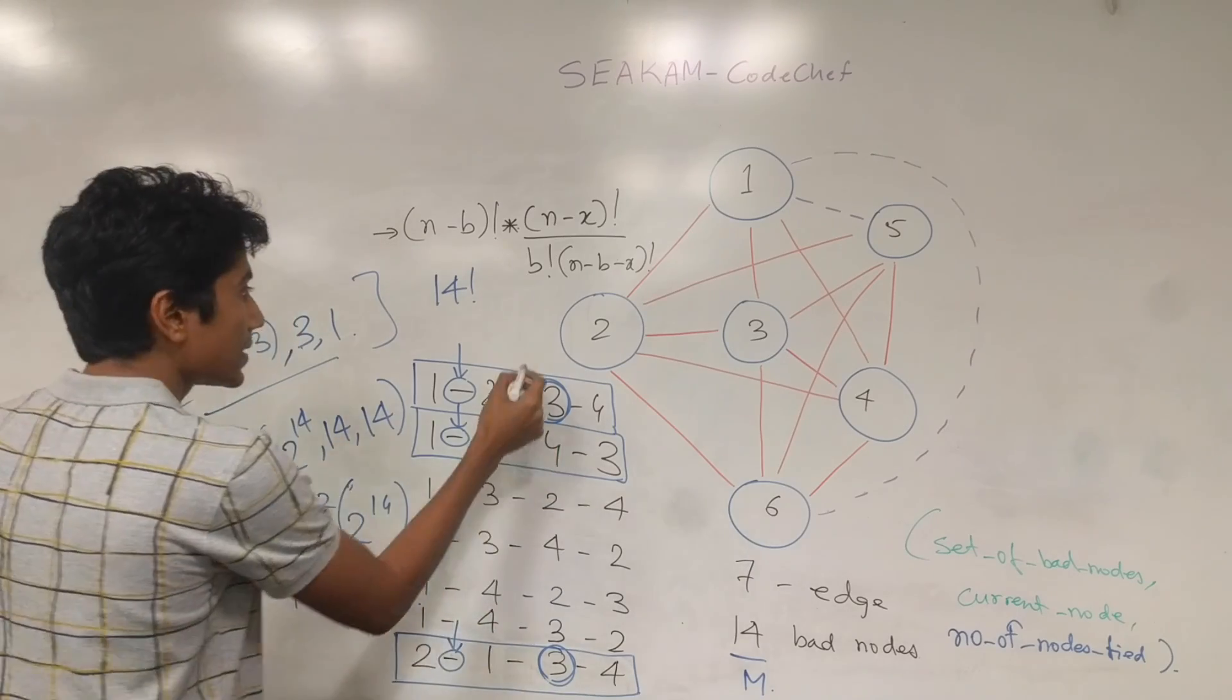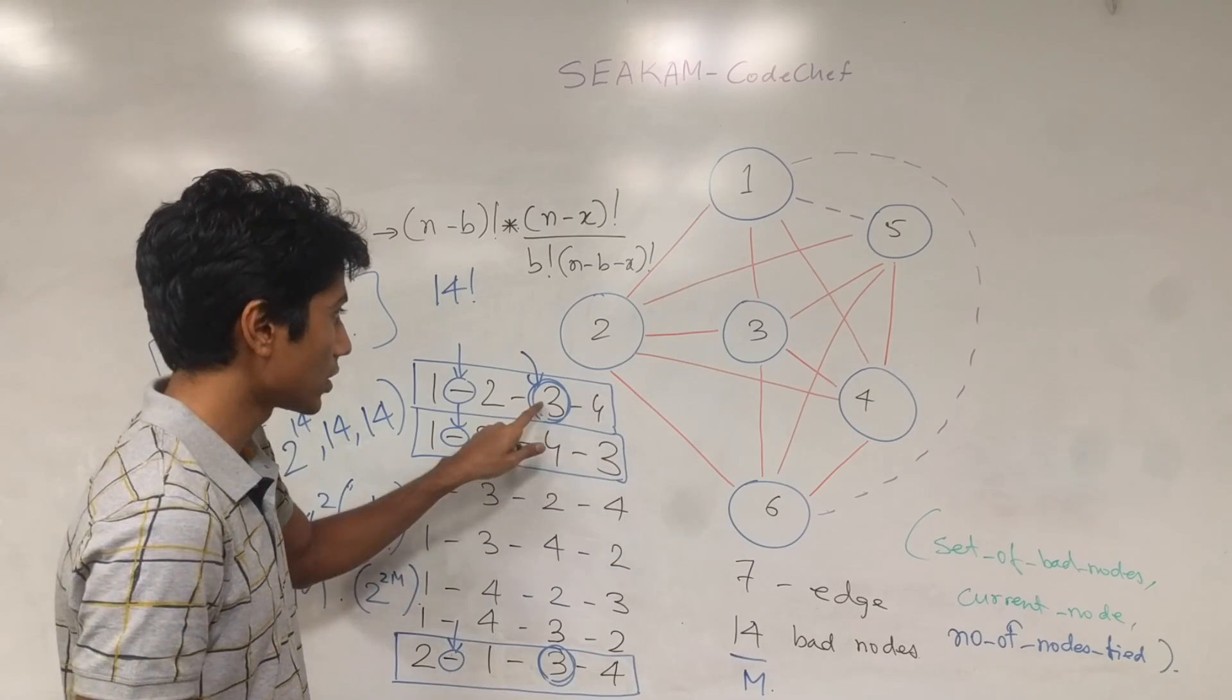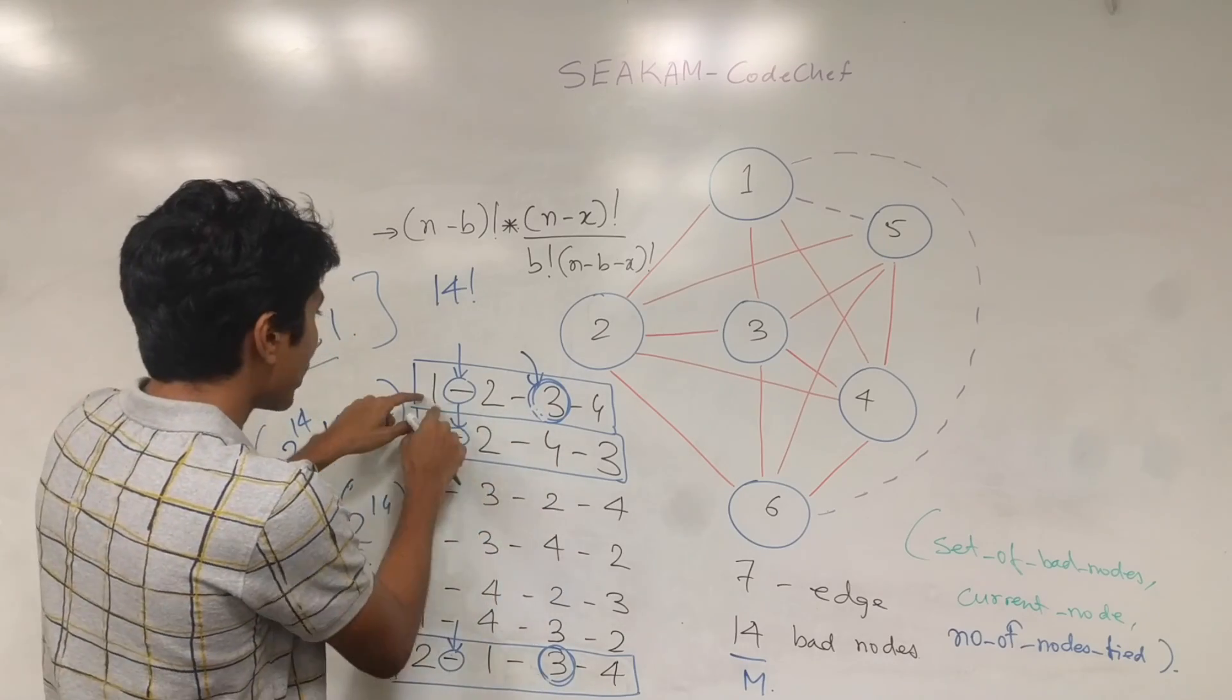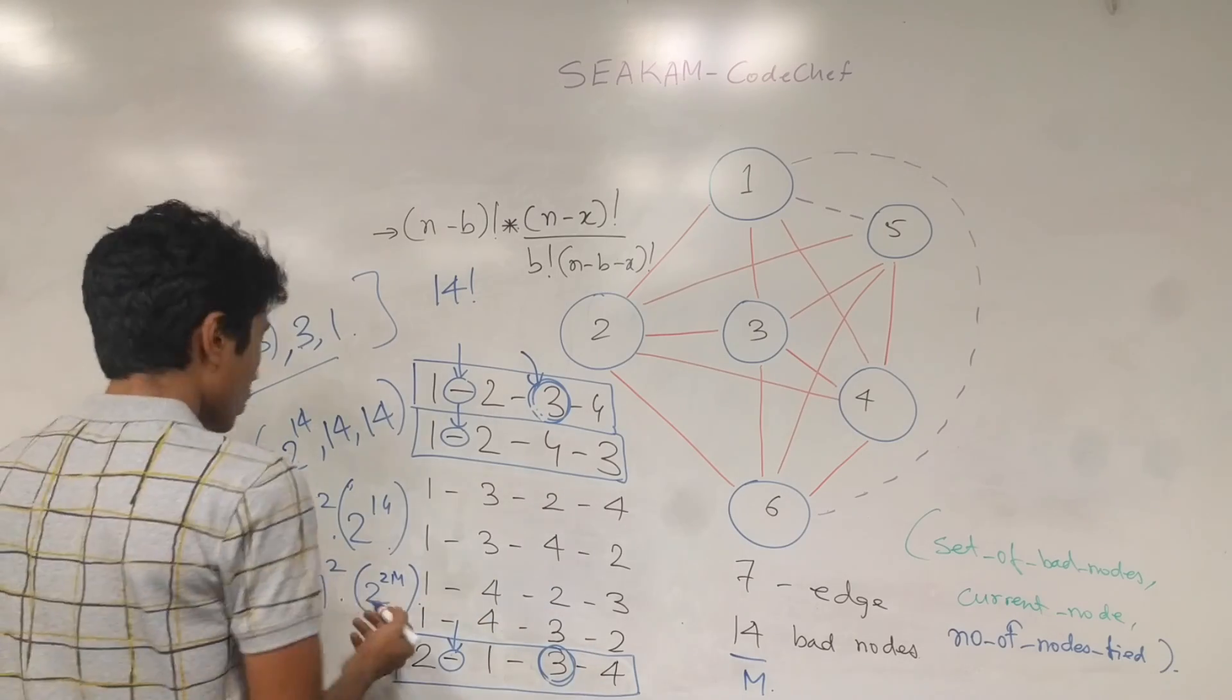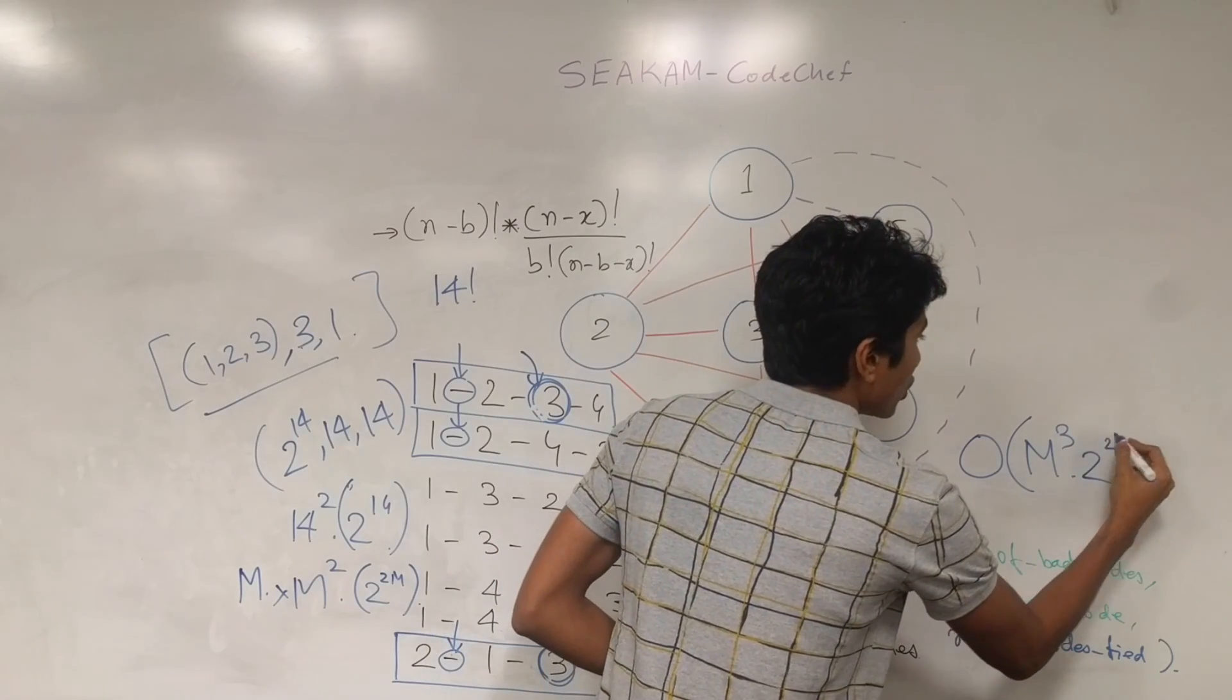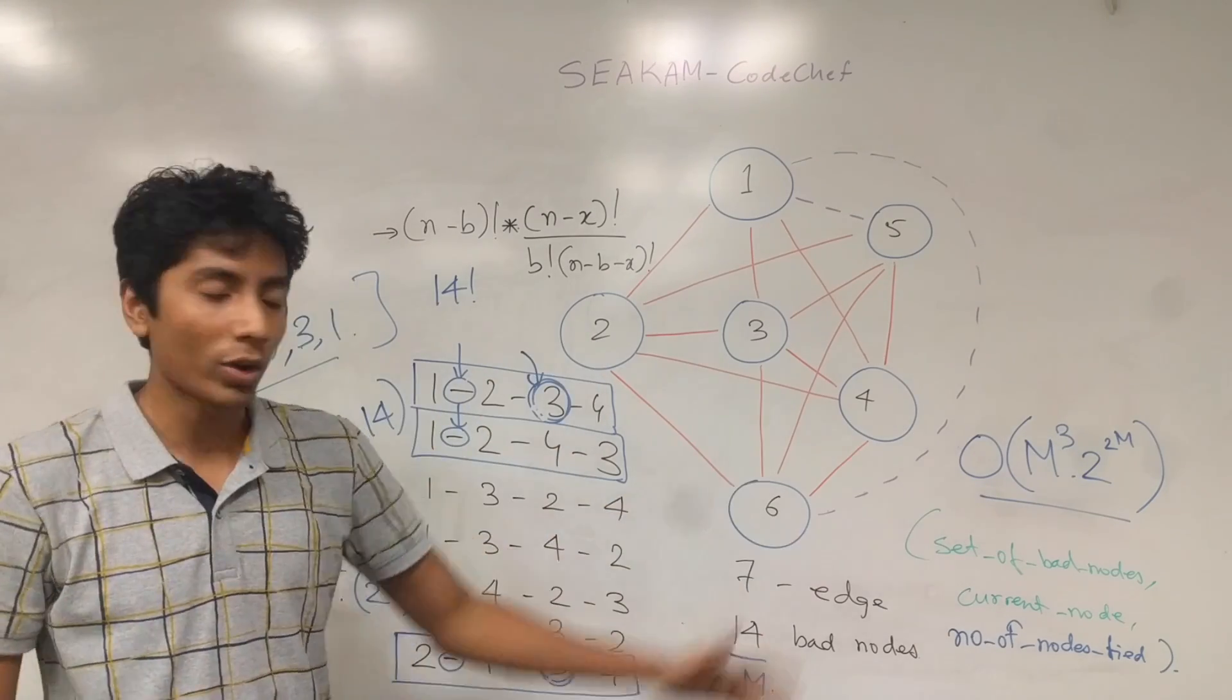If the DP still hasn't been stored, like in this state over here, then what you need to do is you need to go to the remaining branches, remaining cities from this. So from 3 you can go to only 4, but from 2 as you can see, you can go to 3 or 4. And similarly, from 1 you can go to 2, 3 or 4. So that is at most m in number. So overall time complexity for this will be order m cube, that's m cube over here, into 2 raised to power 2m. This is the overall time complexity. And let's just briefly go over, have a revision of what we just did.